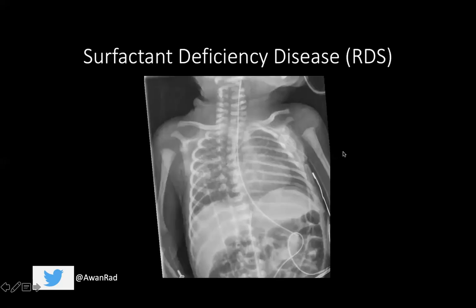Contrast that to surfactant deficiency disease or respiratory distress syndrome, where there are focal abnormalities. Surfactant is produced by type two pneumocytes, and it decreases alveolar surface tension, decreases alveolar collapse, and increases lung compliance. The newborn synthesizes surfactant between 20 and 35 weeks gestation, so when you have decreased surfactant, this is really a disease of premature infants. Prematurity is the major risk factor for RDS. Other risk factors may include diabetes, but the key risk factor on the USMLE is prematurity.